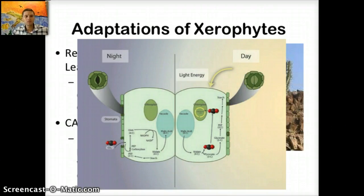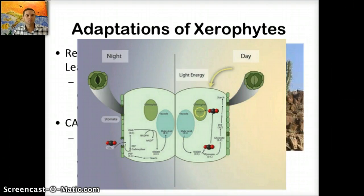C4 plants, on the other hand, have adaptations that allow them to take in CO2 very quickly, and it's transported directly to the Rubisco in order to begin the light-independent reactions to make sugar.